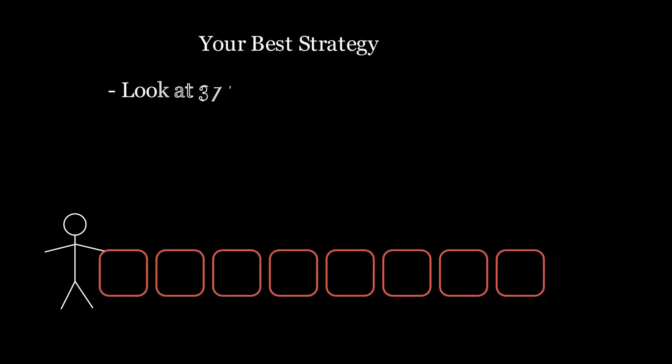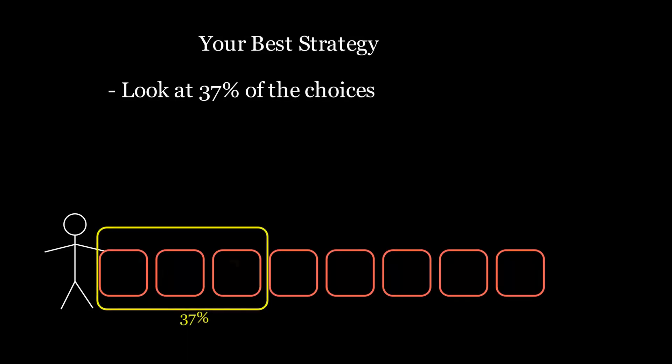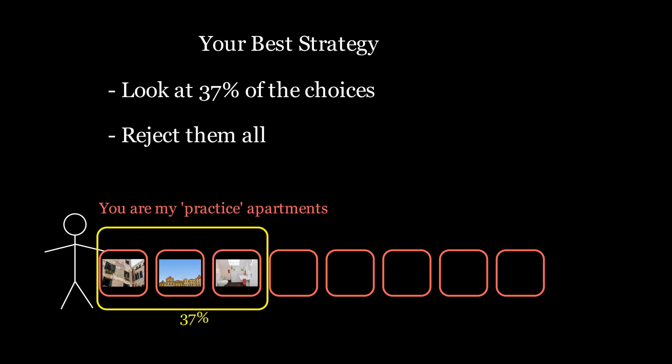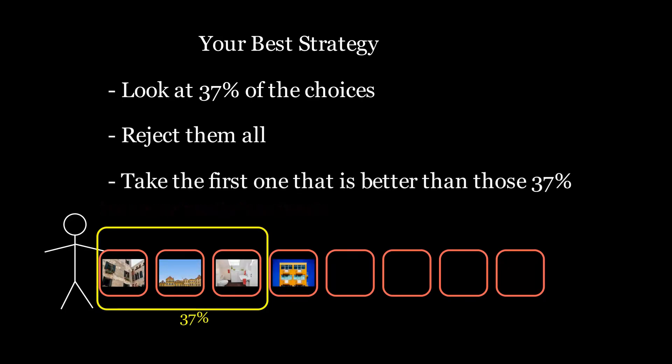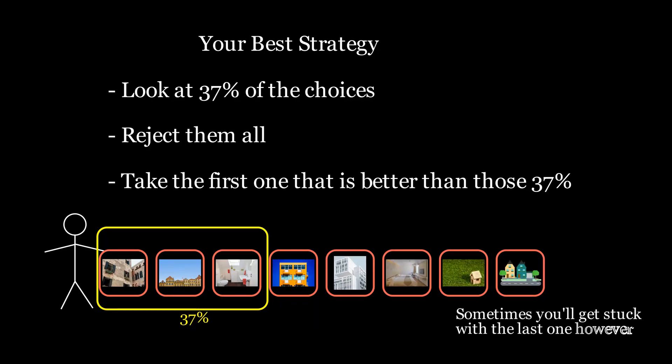So given those three conditions, what's your strategy for getting the best apartment? The optimal strategy is actually pretty straightforward. You start by seeing 37% of the available apartments and rejecting all of them. You then continue looking at the apartments and take the first apartment that you see that is better than any you have previously seen. If you get to the very last apartment and it turns out the best one was in the first 37%, then you're stuck with the last one.